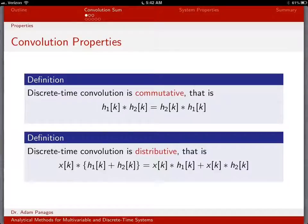Discrete time convolution has several properties we want to look at. Right now we're going to look at the commutative and distributive properties of discrete time convolution.